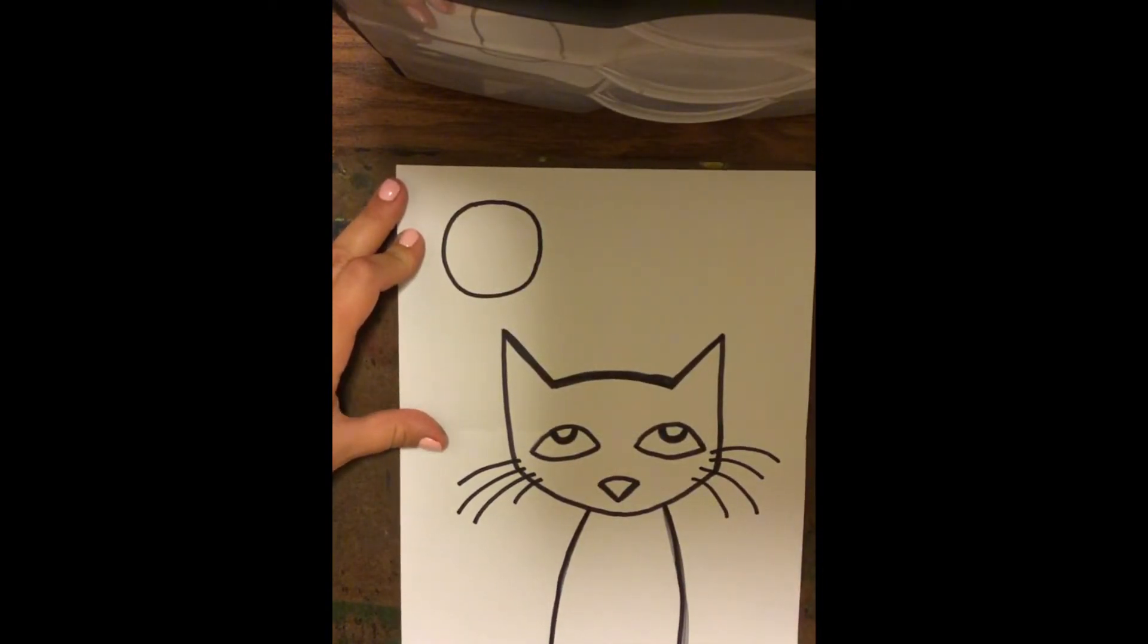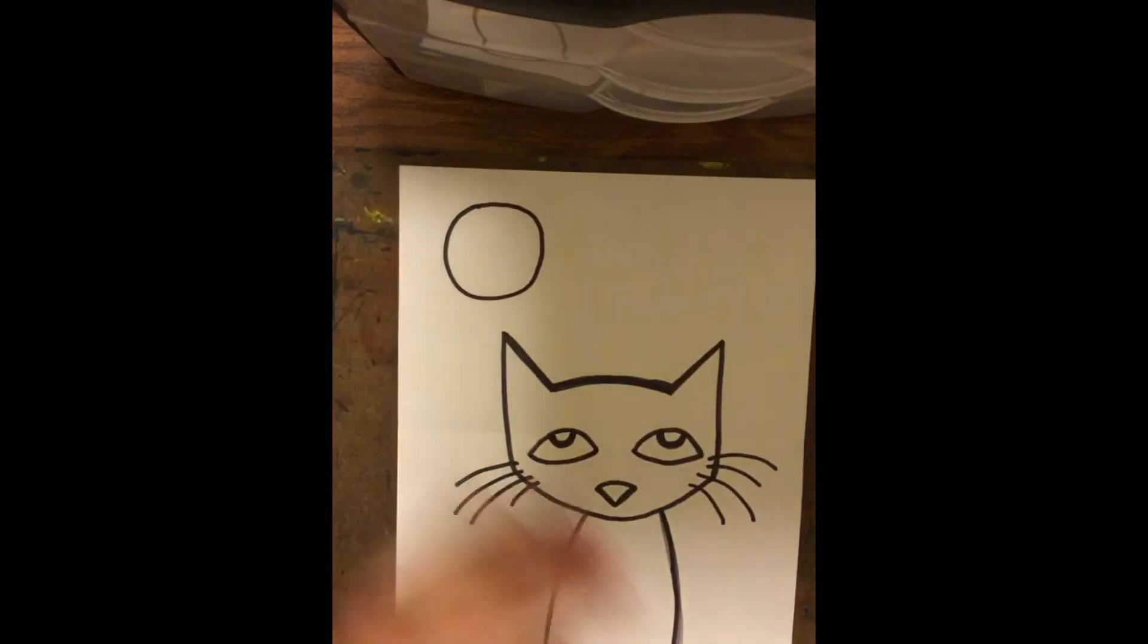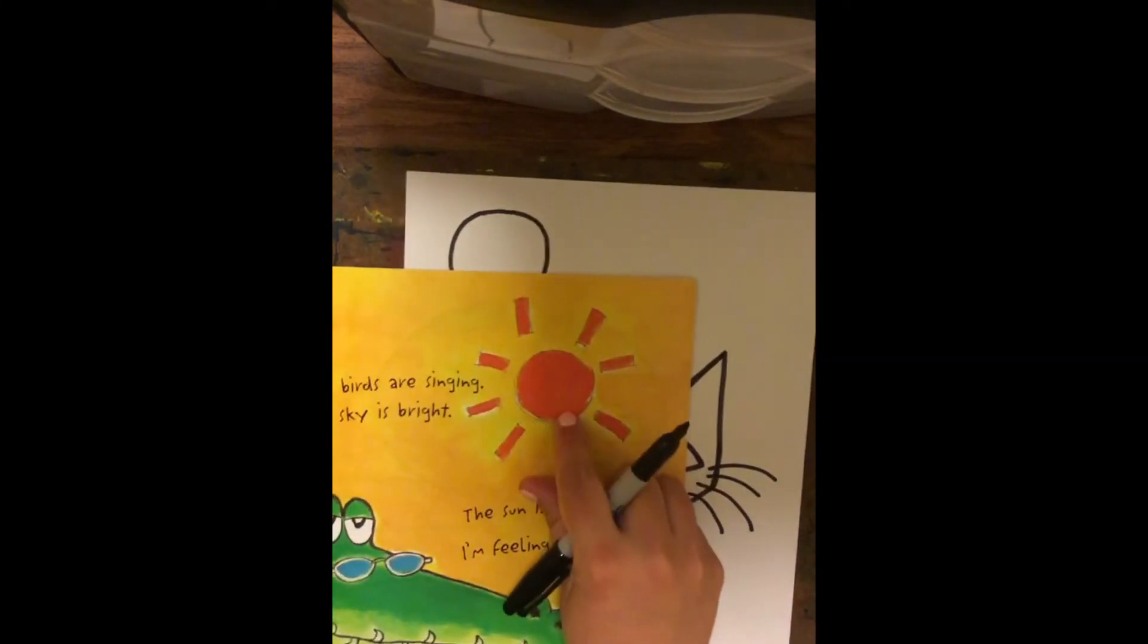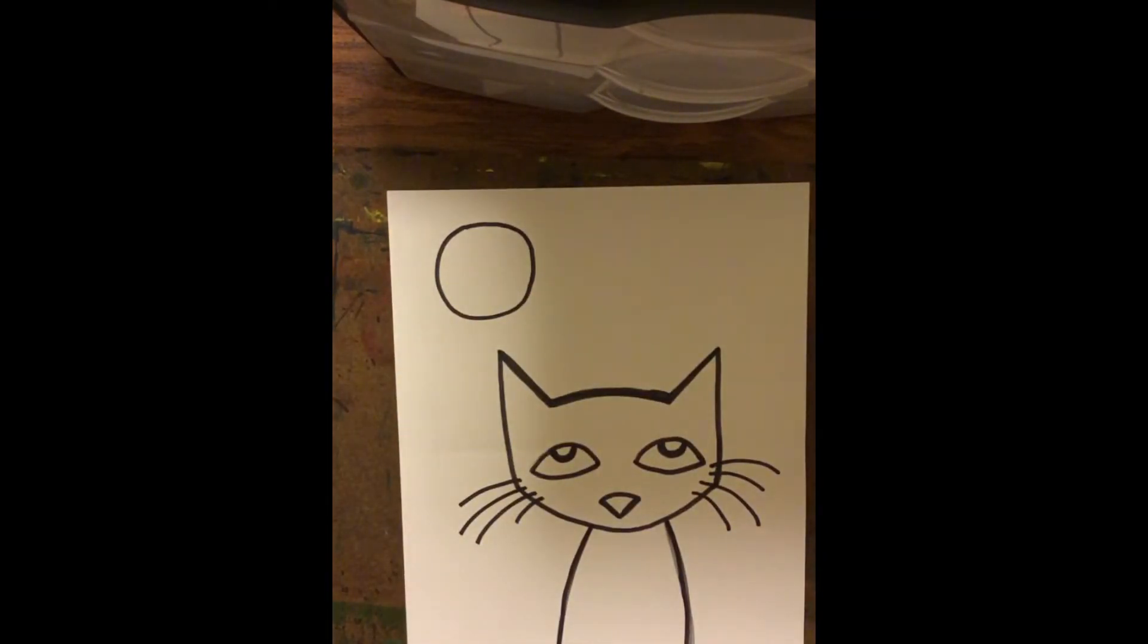And then we're going to do his sun rays all the way around it. So just going off of the top right there, all the way around that circle. And the way we're going to do this is, if you look back in the book, James Dean did it with a circle outline and then he did these little rectangles for his sun rays.